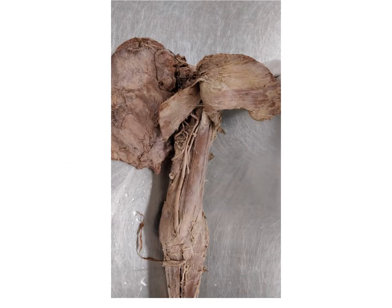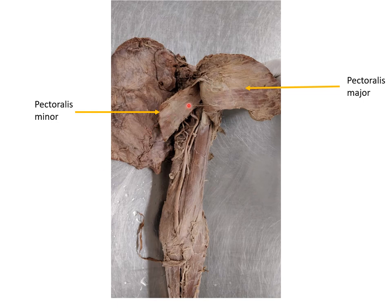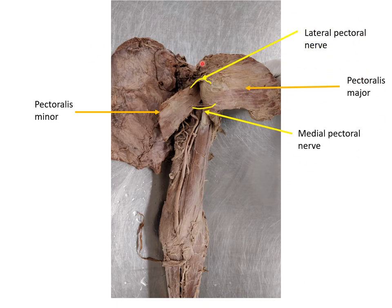In this image the pectoralis major has been reflected, revealing the pectoralis minor muscle. A thin thread-like structure visible here is the medial pectoral nerve, which pierces the pectoralis minor and supplies the pectoralis major. There is also the lateral pectoral nerve, which supplies both the pectoralis major and minor muscles.